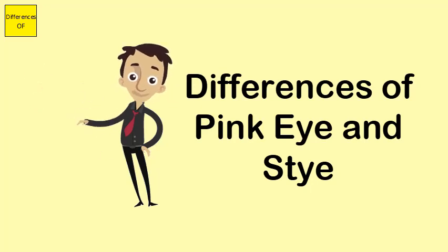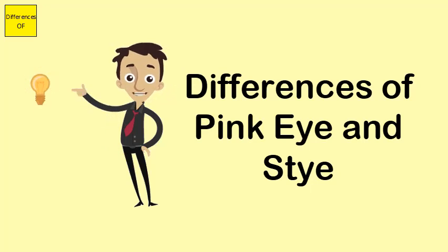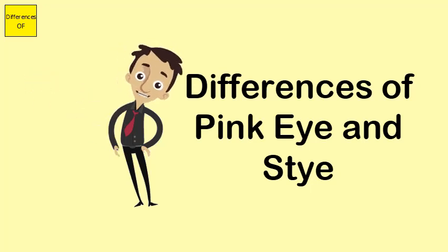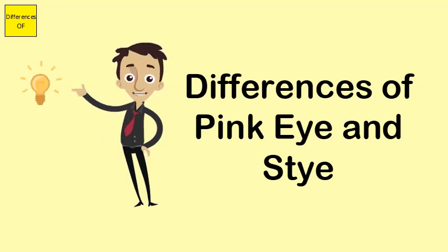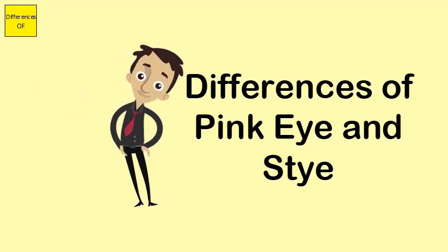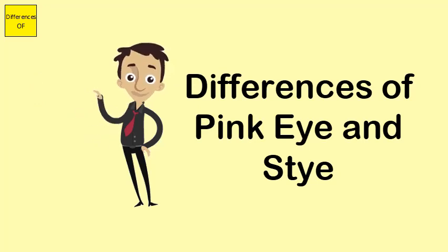Stye has pus formation and requires drainage. Pink eye has no pus formation and hence no drainage is required. Stye has no discharge and is generally colorless. Pink eye has discharge — white if viral, and yellow if bacterial.